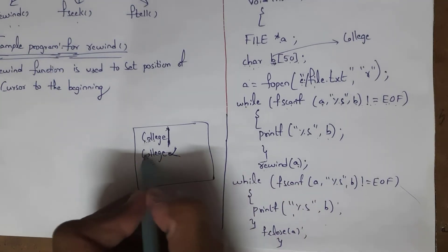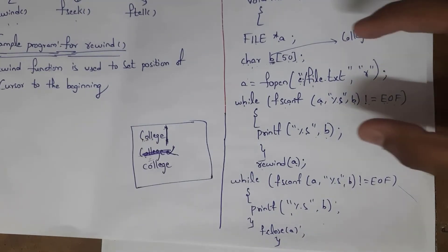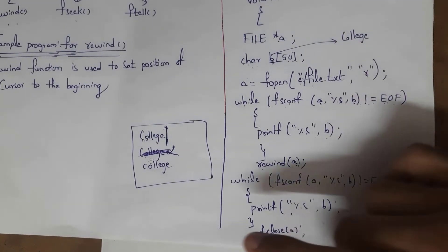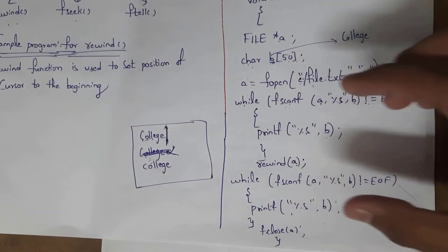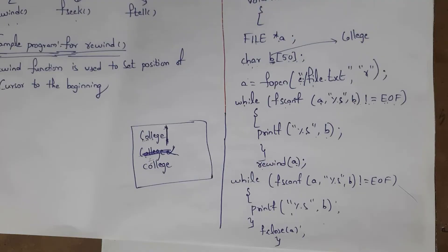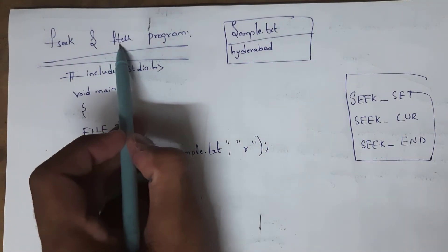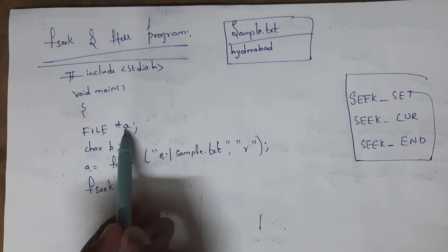By writing rewind(a) with a semicolon, the cursor is placed at the first position. Now we will get the output 'college' twice: first it prints 'college', then the cursor is brought back to the first position by rewind, and then 'college' is printed again. At last we close the file using fclose(a).